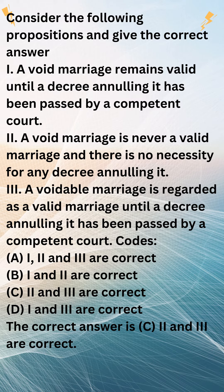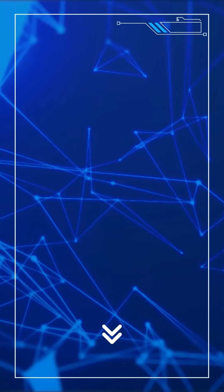3. A voidable marriage is regarded as a valid marriage until a decree annulling it has been passed by a competent court. This statement is correct. A voidable marriage is initially considered valid but it can be annulled by a competent court if certain conditions or grounds for annulment exist. Until a decree of annulment is issued, it is treated as valid. So, propositions 2 and 3 are correct, making option C the correct answer.